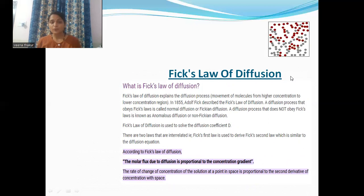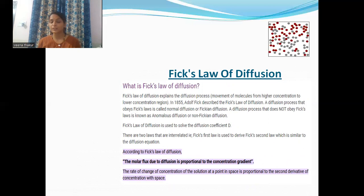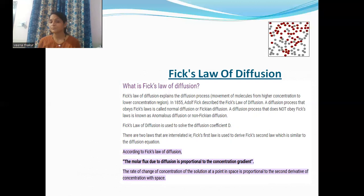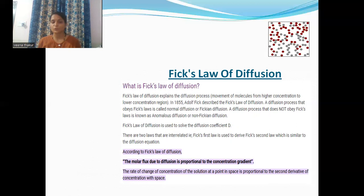Fick's law of diffusion explains the diffusion process — the movement of molecules from a higher concentration to a lower concentration region. In 1855, Adolf Fick described Fick's law of diffusion. A diffusion process that obeys Fick's law is called normal diffusion or Fickian diffusion. A diffusion process that does not obey Fick's law is known as anomalous diffusion or non-Fickian diffusion. Fick's law is used to solve for the diffusion coefficient D. The two laws are interrelated: Fick's first law is used to derive Fick's second law, which is similar to the diffusion equation. According to Fick's law, the molar flux due to diffusion is proportional to the concentration gradient.